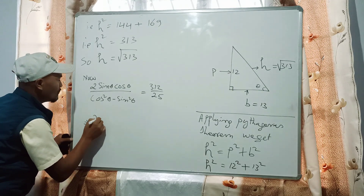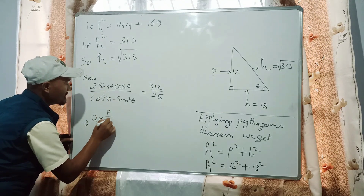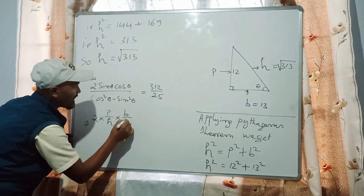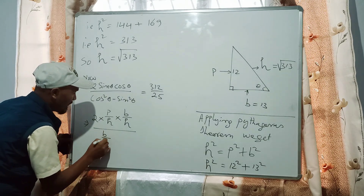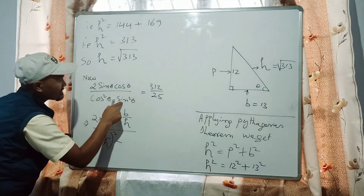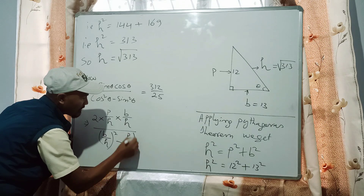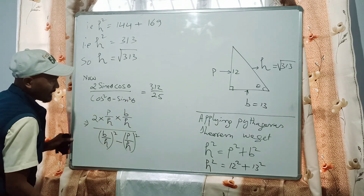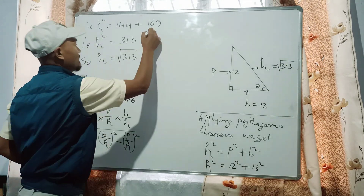For 2 sin theta: the formula of sine is the ratio of perpendicular by hypotenuse. For cos theta: the ratio of cos is base by hypotenuse. For cos squared: the ratio is base by hypotenuse, all squared. For minus sin squared: the ratio of sin theta is perpendicular by hypotenuse, so P by H, squared.